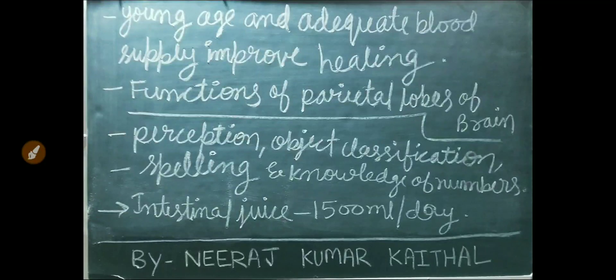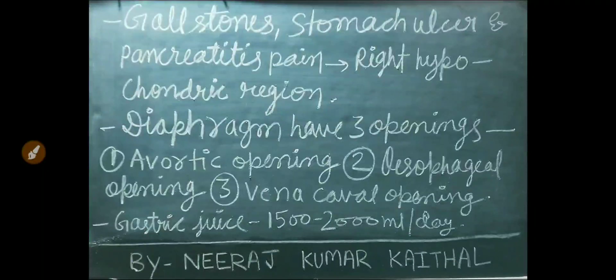Young age and adequate blood supply improve healing. Functions of parietal lobes of brain are perception, object classification, spelling, and knowledge of numbers. Intestinal juice secreted per day is approximately 1500 ml. Pain related to gallstone, stomach ulcer, and pancreatitis is always felt in the right hypochondriac region. The diaphragm separates the abdominal cavity from the thoracic cavity and has three openings: aortic opening, esophageal opening, and vena caval opening.